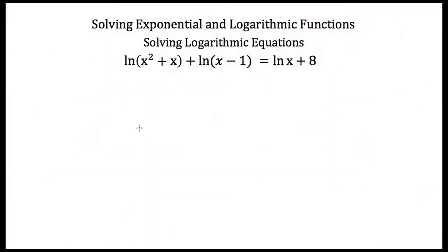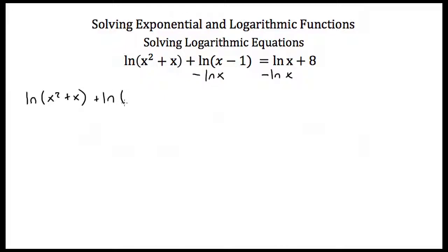Now what if we have a much harder problem? Here we have several log terms in the equation and also an 8 at the end that keeps us from using the one-to-one property. If you want to solve this for x, the first step is to get all of the log terms on the same side of the equal sign. So I'm going to subtract the natural log of x from both sides, ending up with the natural log of x squared plus x plus the natural log of x minus 1 minus the natural log of x equals 8.